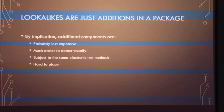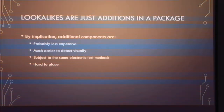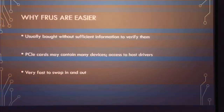By implication, additional components — like adding a die to a package or something on top of an inductor — are probably less expensive than fabbing an ASIC from scratch, but much easier to detect visually. They're subject to the same electronic test methods and very hard to place. Lookalike components correctly occupy a deep position in the hierarchy of things that are hard to accomplish. Field-replaceable units are easier — additionally, they're very easy to swap in and out without a soldering workstation. So verify your FRUs are what you expect them to be; don't just look at the system board.